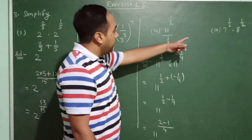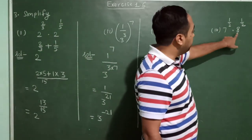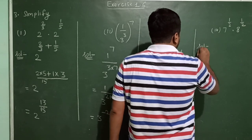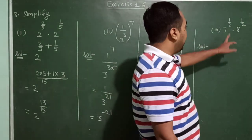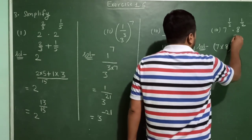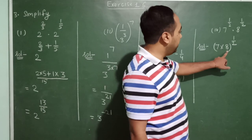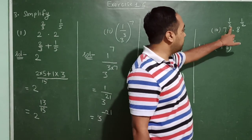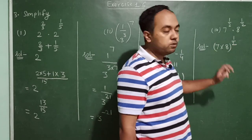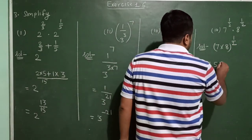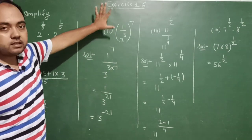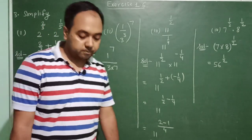The last one: 7 raised to the power 1 upon 2 multiplied by 8 raised to the power 1 upon 2. Over here, the exponents are the same but bases are different. When exponents are the same, we can multiply the bases: 7 into 8 raised to the power 1 upon 2. Since 1 upon 2 is the common power, we multiply 7 and 8 to get 56, and the answer is 56 raised to the power 1 upon 2. This completes the explanation of Exercise 1.6 on laws of exponents for real numbers.